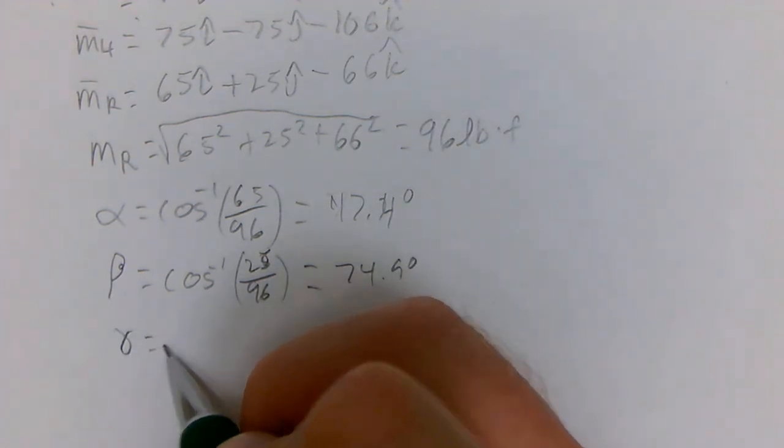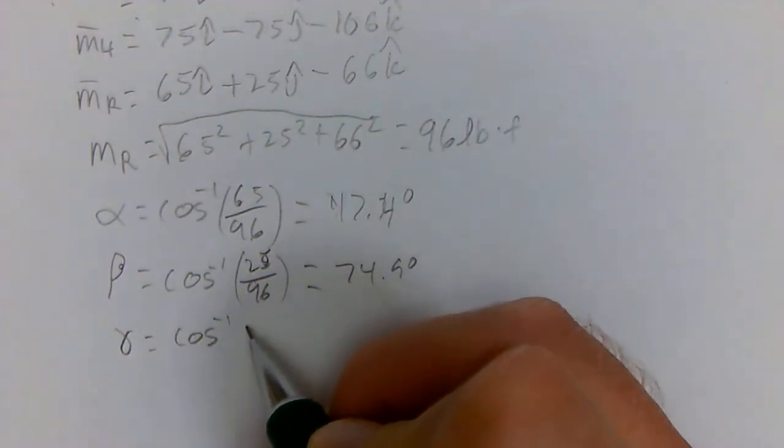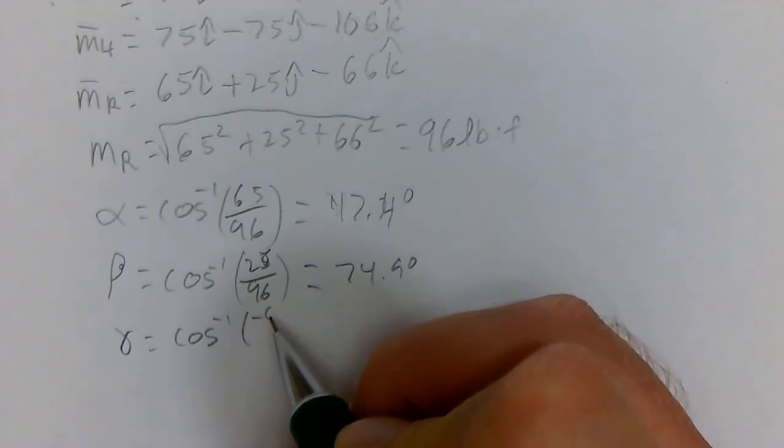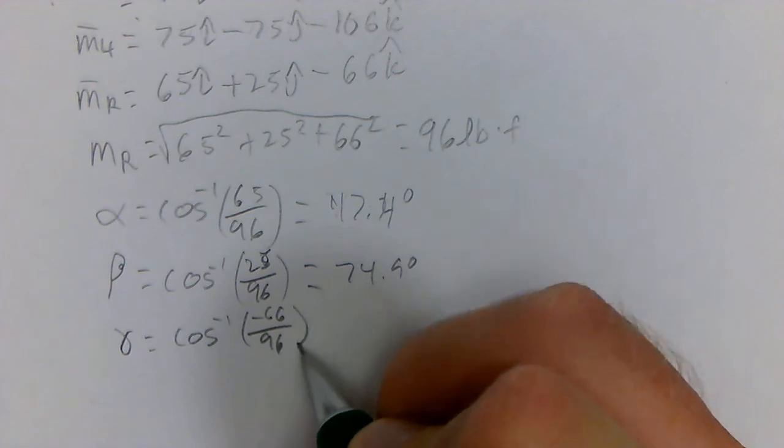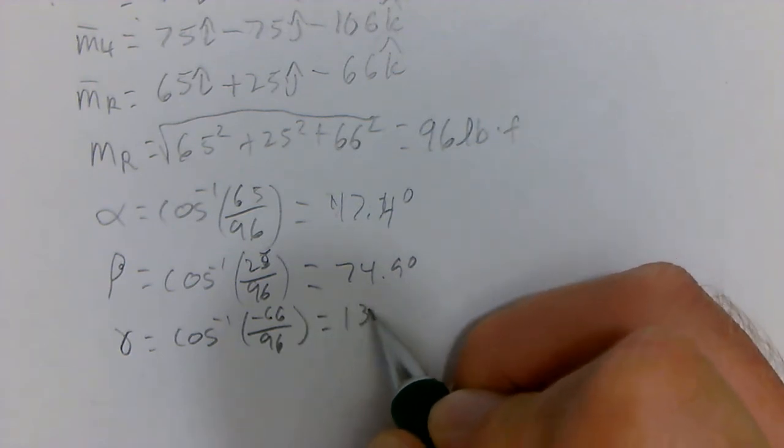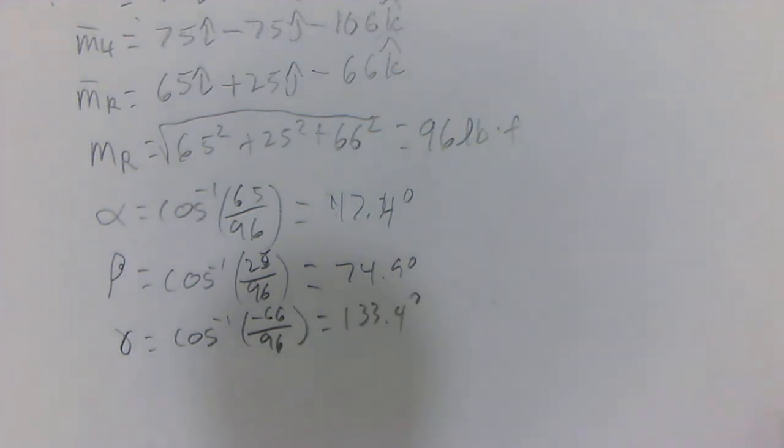And gamma is equal to the inverse cosine of negative 66 over 96, which equals 133.4 degrees.